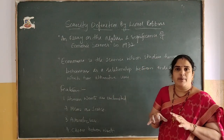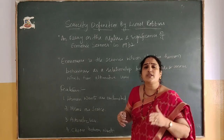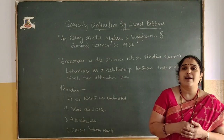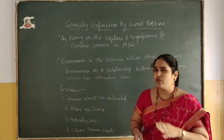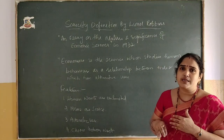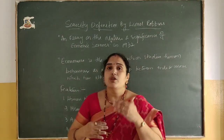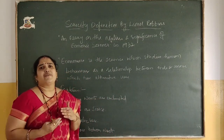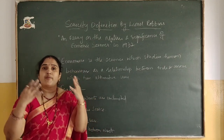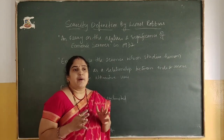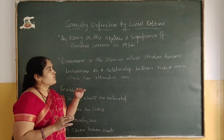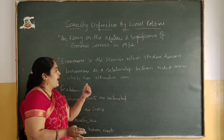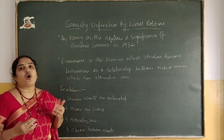Whatever resources are available are scarce. All these resources cannot be sufficient to satisfy our unlimited wants. The resources we have are all scarce, but wants are always unlimited — one want satisfied, another starts. In this way our wants are always multiplied, one after another. So this is a relationship between our unlimited wants and limited resources, and those resources can be put to alternative uses.